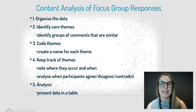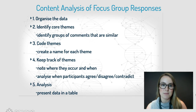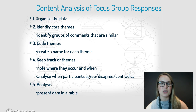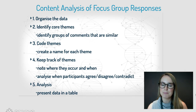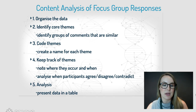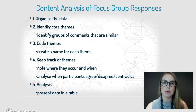Content analysis of focus group responses follows this process: First, you organise the data. Then you identify core themes or groups of similar comments. Number three, you code the themes — giving each group a title to explain what they have in common. You then keep track of these themes, recording when and where they occur. Next, you analyse when participants agree, disagree, or contradict one another or themselves. Finally, you analyse the data, which is often done by presenting it in a table and then discussing it.